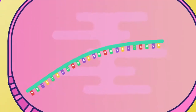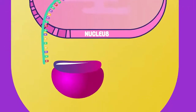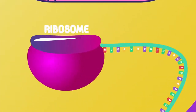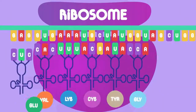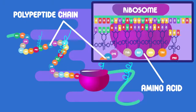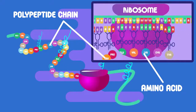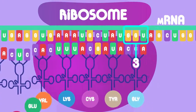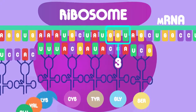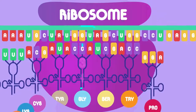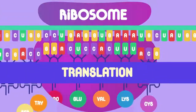The mRNA then travels from the cell nucleus out into the cytoplasm until it reaches and attaches to a ribosome. The ribosome then sticks amino acids together to make a polypeptide chain, following the order of amino acids as coded for by the mRNA. Three base codons on the mRNA code for one amino acid. This whole process in the ribosome is called translation.